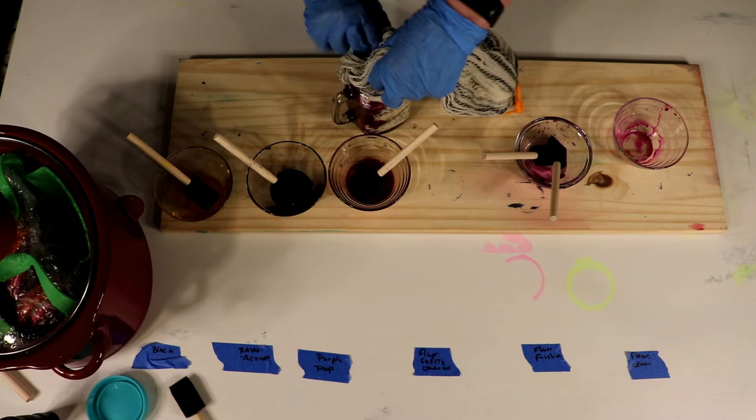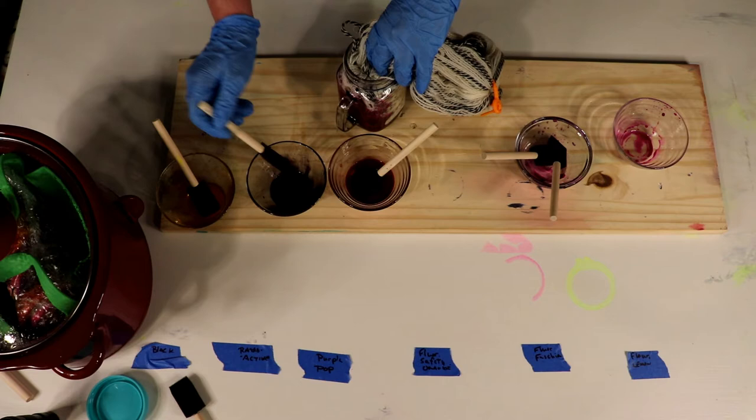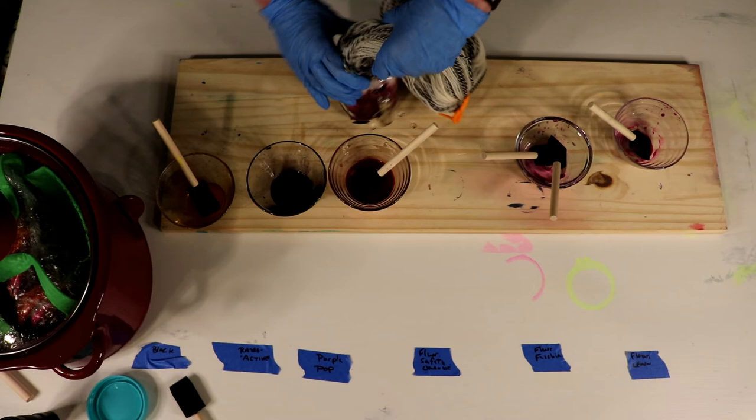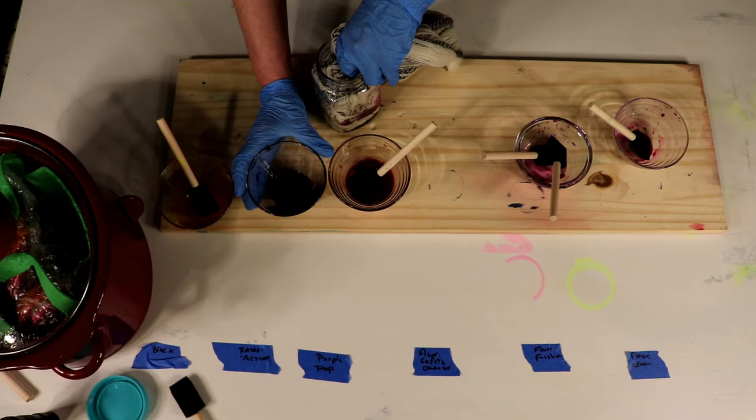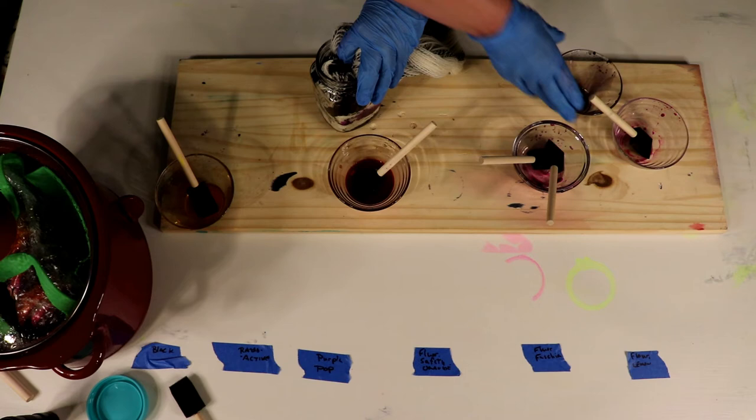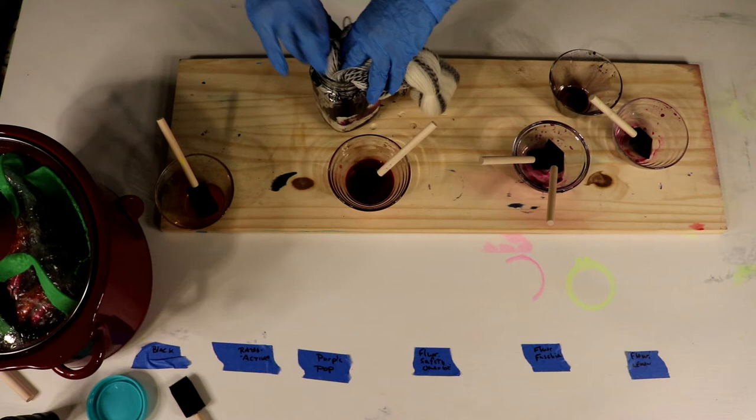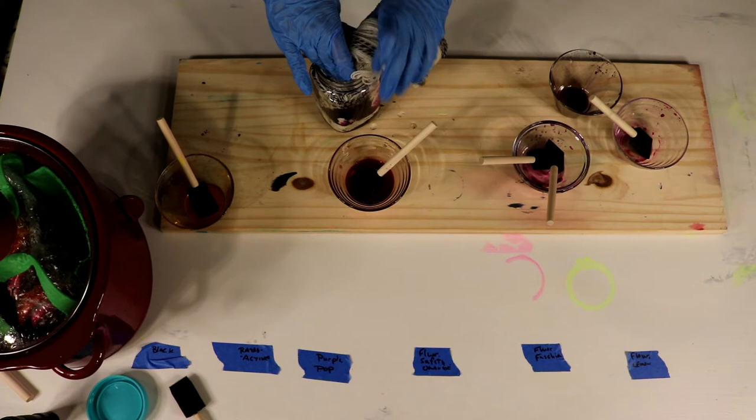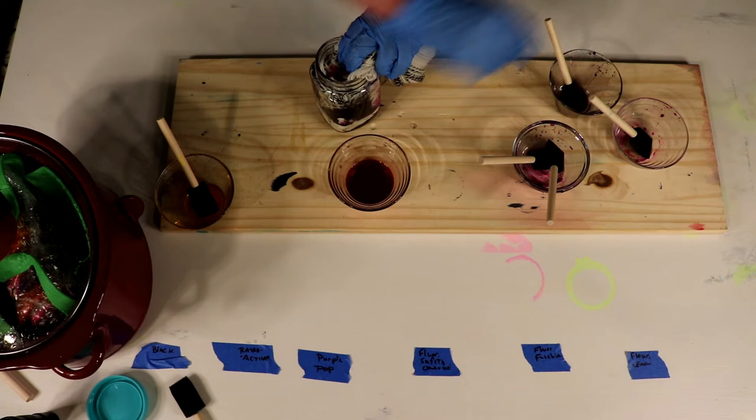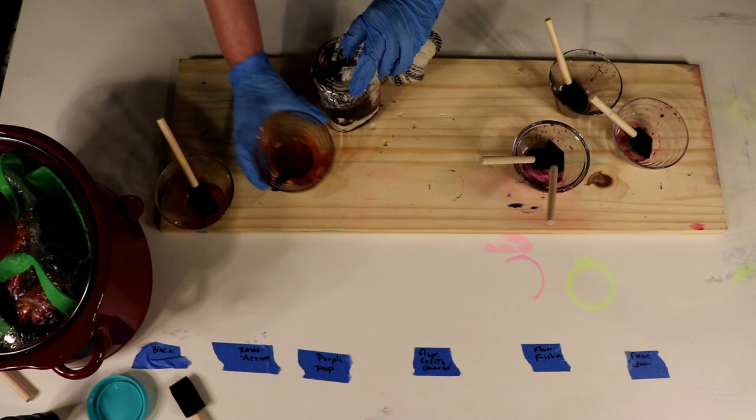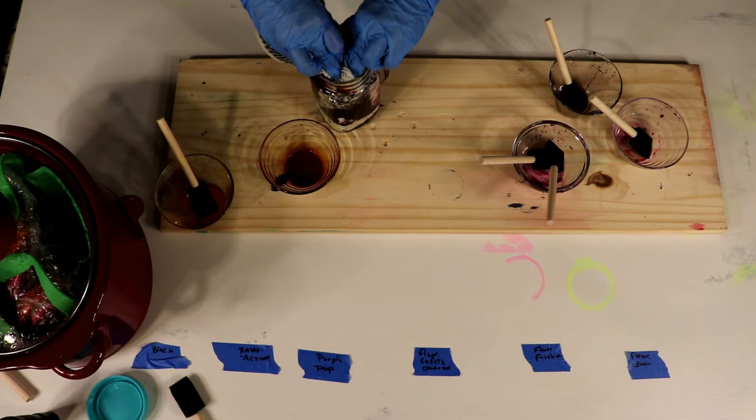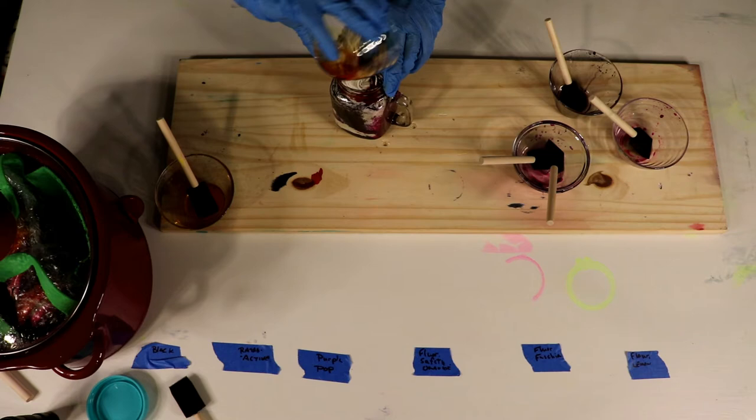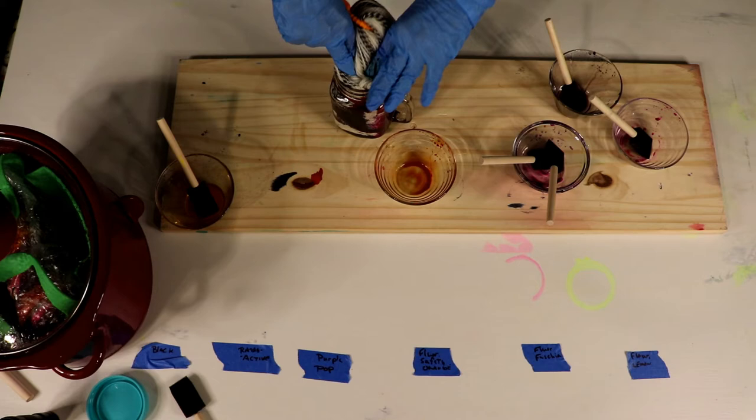So I'm going to put in purple pop. This is the fluorescent fuchsia. Come on, go in there for me. You can go in there more than that. Once it gets wet it scrunches down a lot more. I'm going to flip this over this way this time. I stained my board. This is why Chad has the board out.